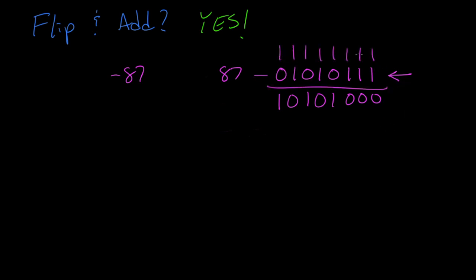1 minus 1 is 0, 1 minus 1 is 0, 1 minus 1 is 0, 1 minus 0 is 1, and yeah, it seems to work for each one of the bits here. So what we're doing is we are subtracting our original number from 2 to the nth minus 1, which is the same thing as 255. The last step is to add 1.